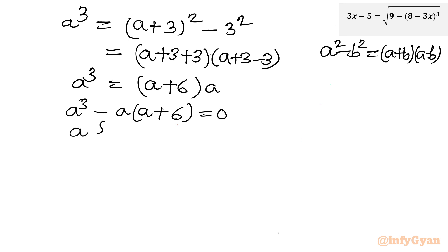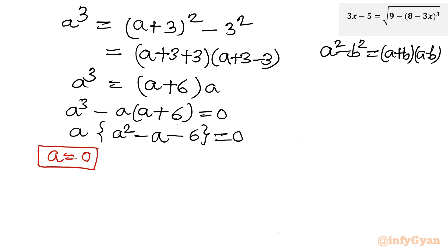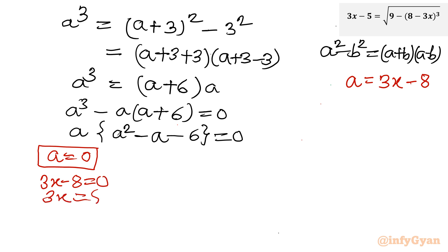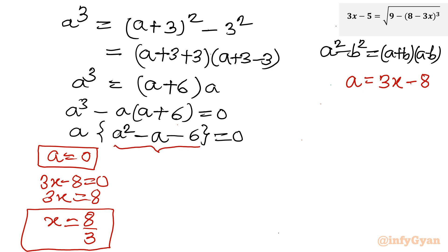Taking a as a common factor: a times (a squared minus a minus 6) equals 0. The first factor gives a equal to 0. Since a equals 3x minus 8, we get 3x minus 8 equals 0, so 3x equals 8, and therefore x equals 8 over 3. You can see this is more than 2, so this solution is valid.